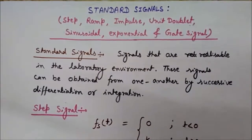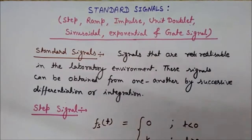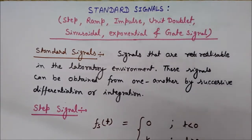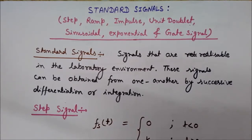I am Lalit Vasist. In my previous video I discussed what is a signal and also very interesting daily life examples of signals. So now in this lecture I will tell you different types of standard signals. These standard signals are also known as singularity functions. A standard signal, also called a singularity function, is a signal that is realizable in the laboratory environment. One very interesting thing about standard signals is that these signals can be obtained from one another by successive differentiation or integration.